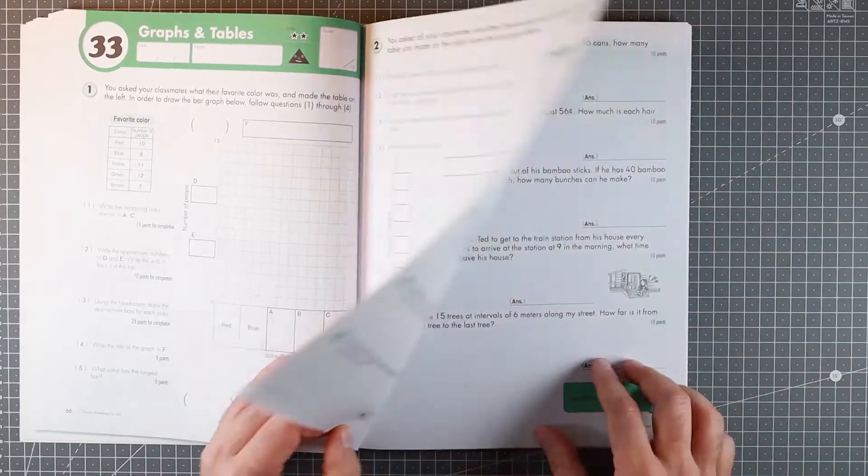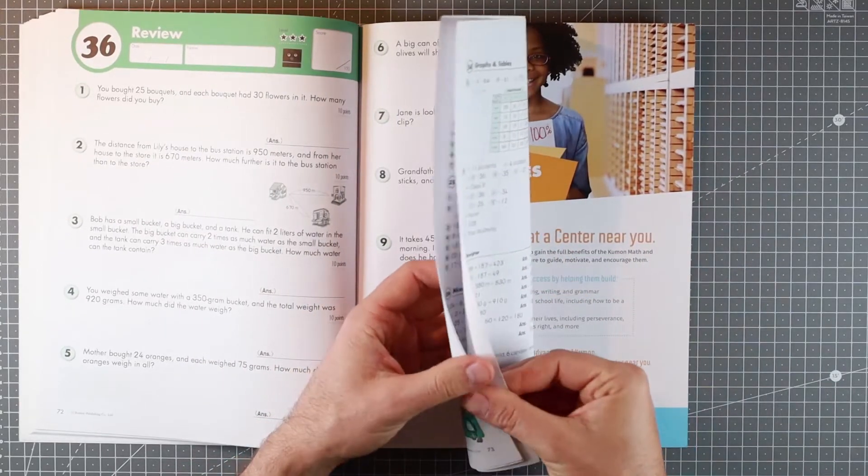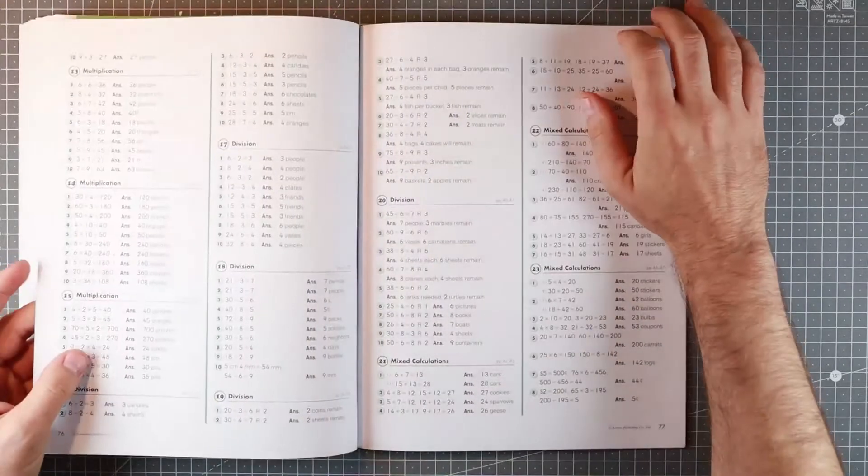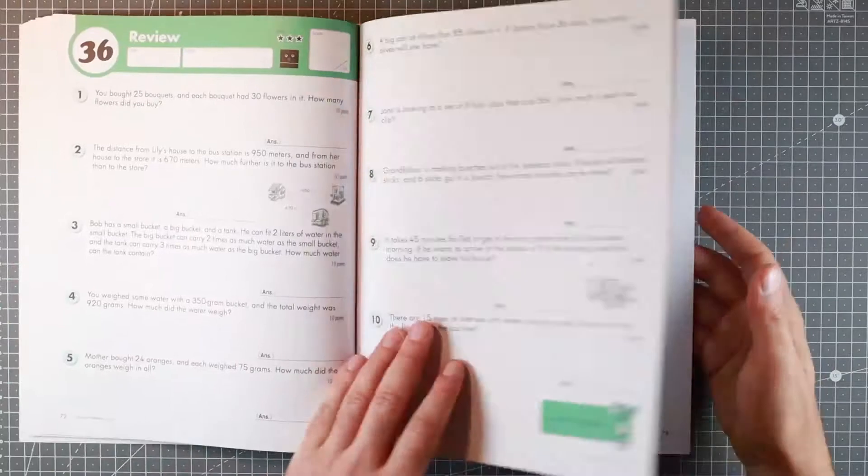There are solutions at the back. If you look it's worth ripping them out and giving them to your kiddo and having them check their own work as they go through it and kind of figure out what mistakes they might have been making.